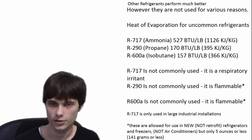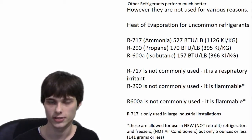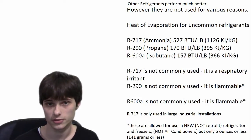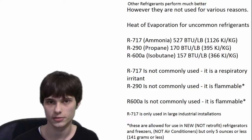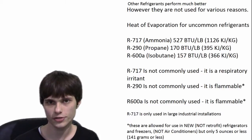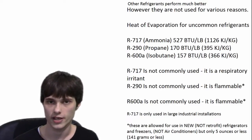Refrigerants that aren't commonly used — and I'll show you some of those up here — they perform much better. But for one reason or another, they're not actually used. Hydrocarbons like propane and isobutane have higher heats of evaporation, so if you used those, you wouldn't have to pay as much to circulate them through the system. But unfortunately, you can't use those — it's illegal to use those in an air conditioner because they're flammable and they're deemed too dangerous to use. Ammonia is a great performer, but again, you can't use it. The reason is simple: it's a respiratory irritant. You get one little whiff of that, you won't be able to breathe, and you could even pass out. Although it is used in some very large industrial and commercial applications, you still can't use it in your home.